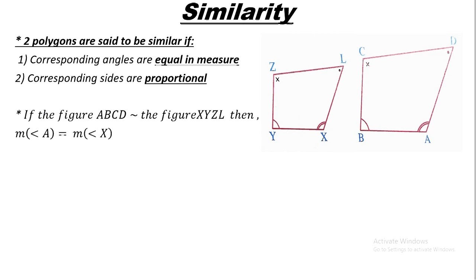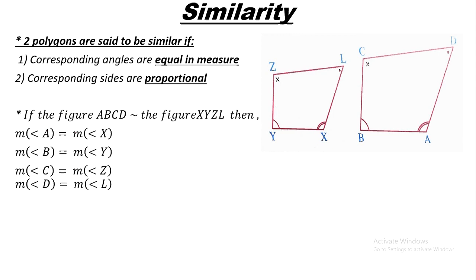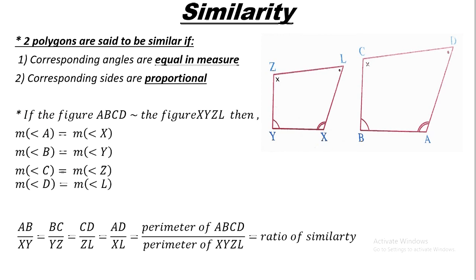Then we can say: measure of angle A equals measure of angle X, the first angle in the first polygon corresponds to the first in the other. Measure of angle B equals measure of angle Y, measure of angle C equals measure of angle Z, and measure of angle D equals measure of angle L. The corresponding sides are proportional: AB/XY = BC/YZ = CD/ZL = AD/XL.